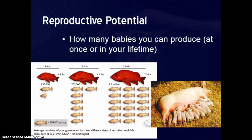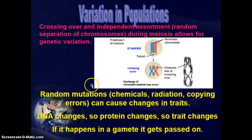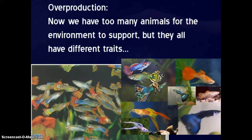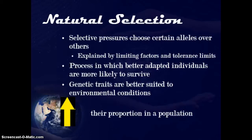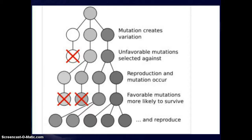There's also reproductive potential — basically how many offspring you can produce — which increases an organism's fitness if they can make more babies and pass on variation more times. Eventually we get to a point where there are too many animals, the environment can't support them — they're at carrying capacity — but they all have different traits. This is overproduction. Overproduction leads to competition, either inter-specific competition between different species or intra-specific competition within the same species. That competition leads to natural selection: different selection pressures like food availability cause certain genes to be selected over others, so better-adapted individuals are more likely to survive and pass on their traits.